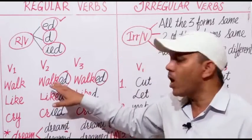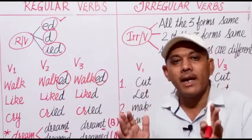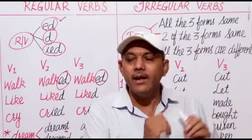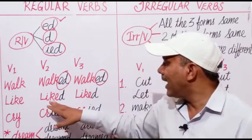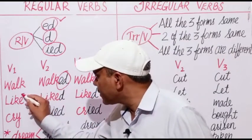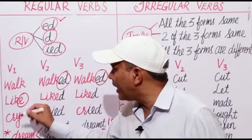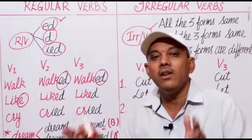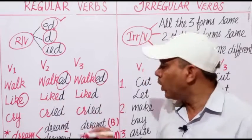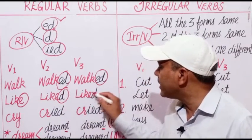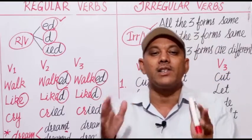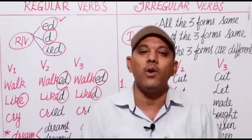Walk, walked, walked. Play, played, played. Like, liked, liked. Here, the base form of the verb 'like' ends in e itself. So we shall add only -d to it to change its two other forms: like, liked, liked.